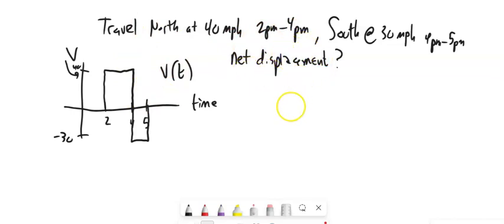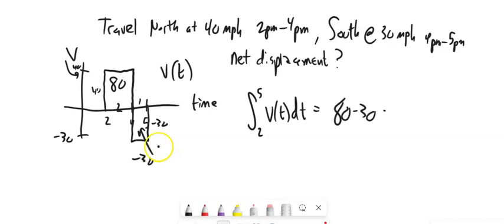And so, this could be a graph of the velocity function for this situation. And so, if we want the net displacement, essentially what we want to do is we went from 2 to 5 of that function relative to time. So, this is actually, we can do this geometrically. This distance is 2, this is 40. So, this is 80. This distance is 1. This distance is negative 30. So, this is negative 30. So, that would be 80 minus 30, 50 miles. So, that's our net displacement. It's 50 miles, this thing is 50 miles away from where it started.